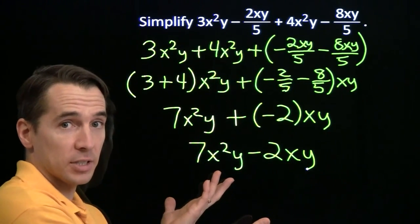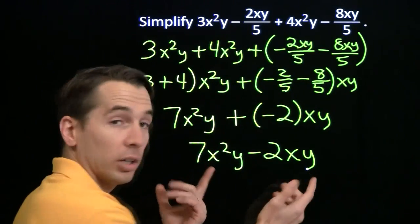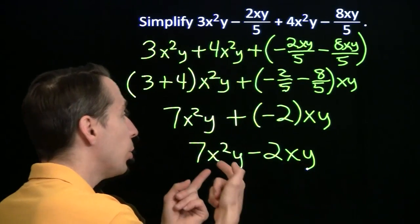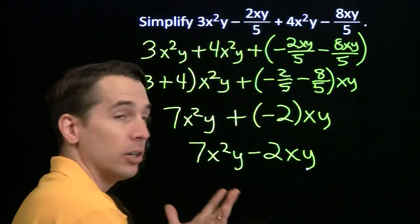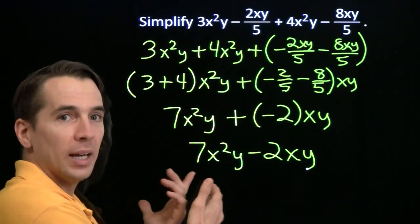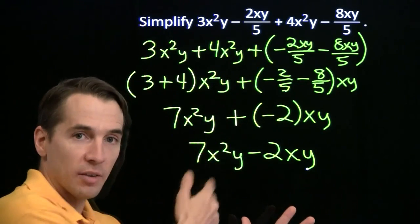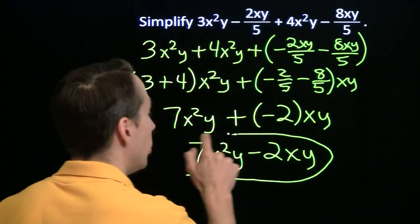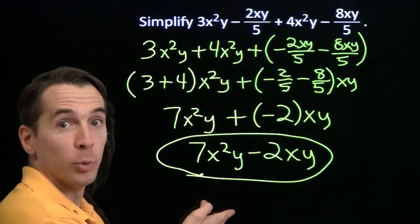But here is where we have to stop. These aren't like terms. X squared y is different than xy. We have the same variables, but here the x is squared and here it isn't. These aren't like terms. We can't write this as 5, which is 7 minus 2. We can't write this here. And we are done.